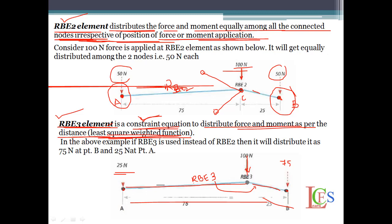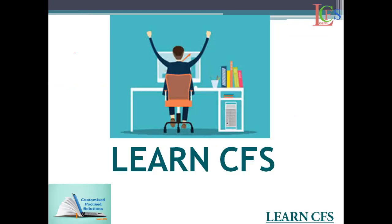In general, RB2 transfers the same force equally without considering its length or position, but in RB3, it transfers with respect to the length and position of the force and movement. This is the main difference between RB2 and RB3 elements. In pre-processing, if you are transferring force from one point to another, or transferring concentrated mass or lumped mass to a structure, always go for RB3 elements. Also, if you have a bolt connection and want to generate multipoint constraints, go with RB3. I hope you understood the main difference between RB2 and RB3 elements. Thank you for watching.